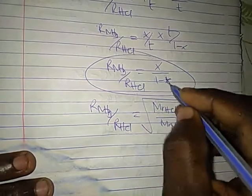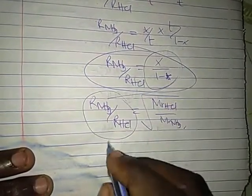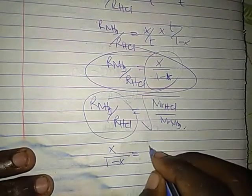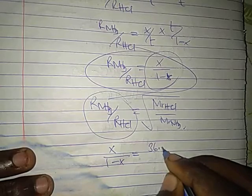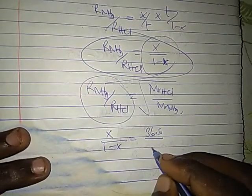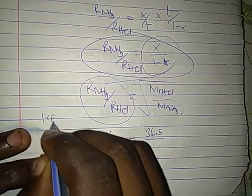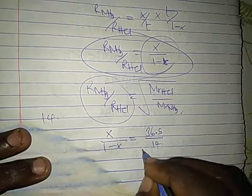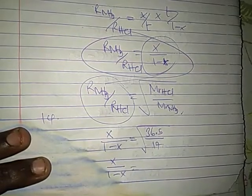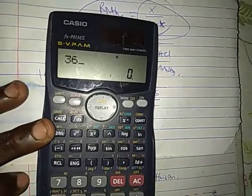Now we cancel the rates. So we get x divided by 1 minus x. Here, the molar mass of HCl is 36.5.